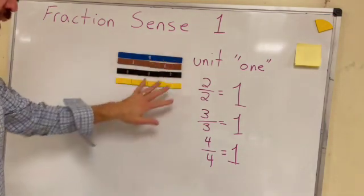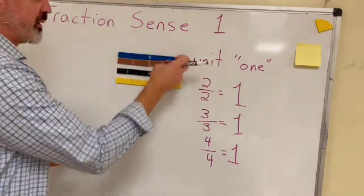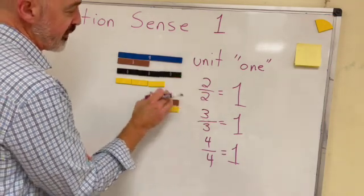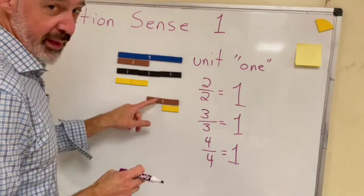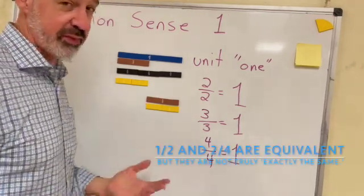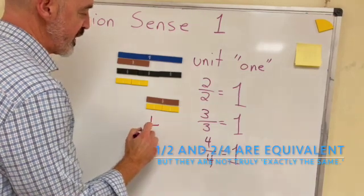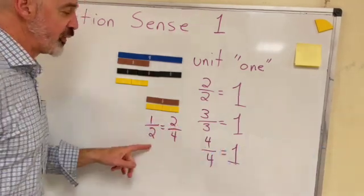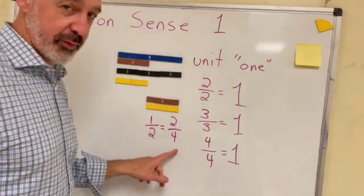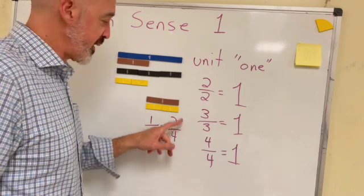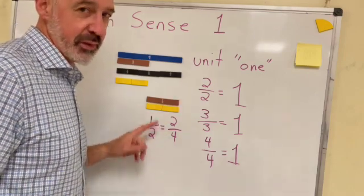But as your kids play around with these pieces, they can start to see equivalency like one half is exactly the same as two fourths. And when kids see this, make sure you write it down and have them write it down. So they can really think about what these numbers mean. Because that's really what's lacking in a lot of kids is making sense of what all these numbers mean when it comes to fractions.